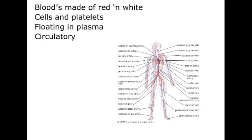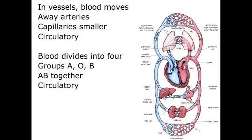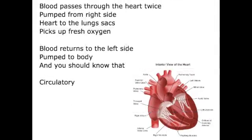Blood's made of red and white cells, floating in plasma — circulatory. In vessels blood moves, arteries, capillaries falling — circulatory. Blood divides, they all be A-B together — lipuses to the heart. From my side, heart to the lung sides, fresh oxygen, blood turns to the left side, comes to body — and you should know that.